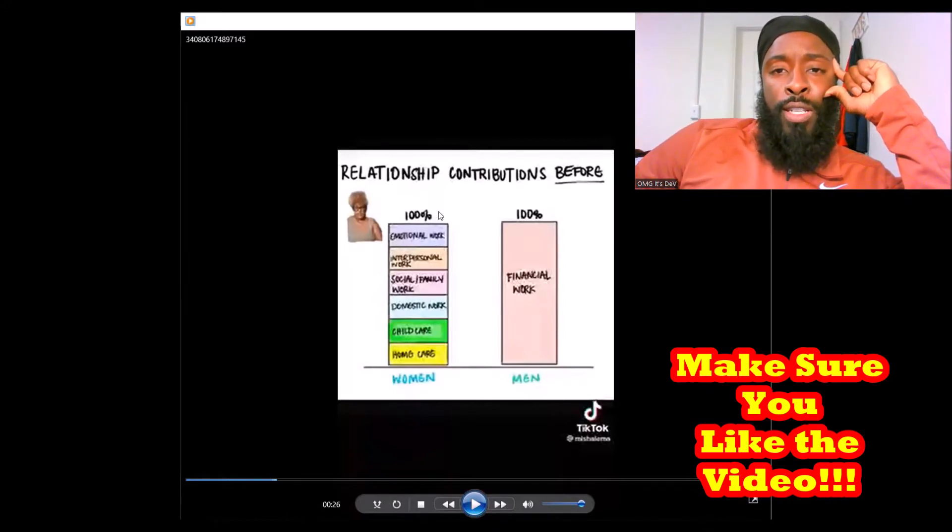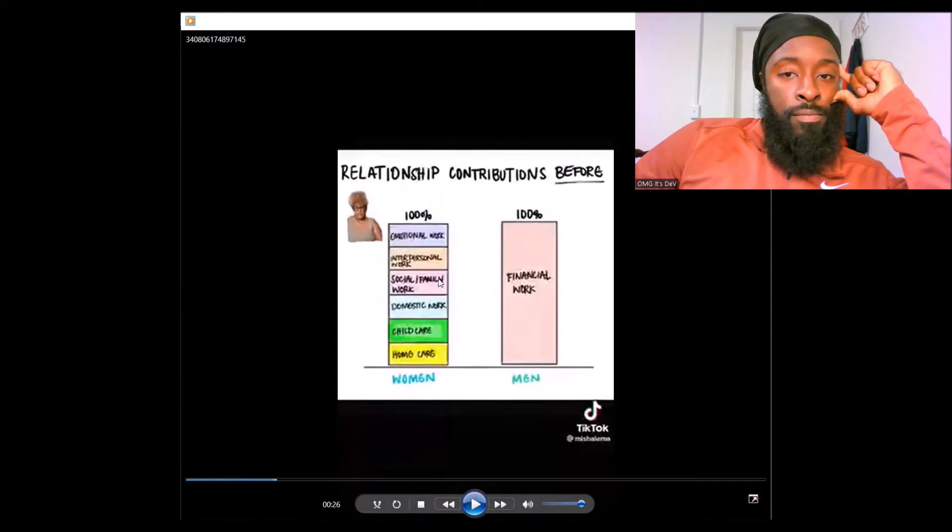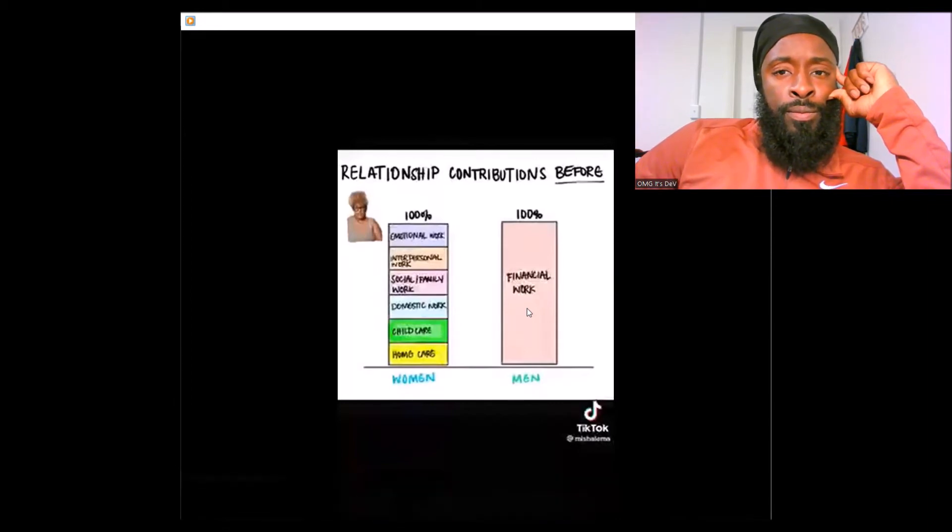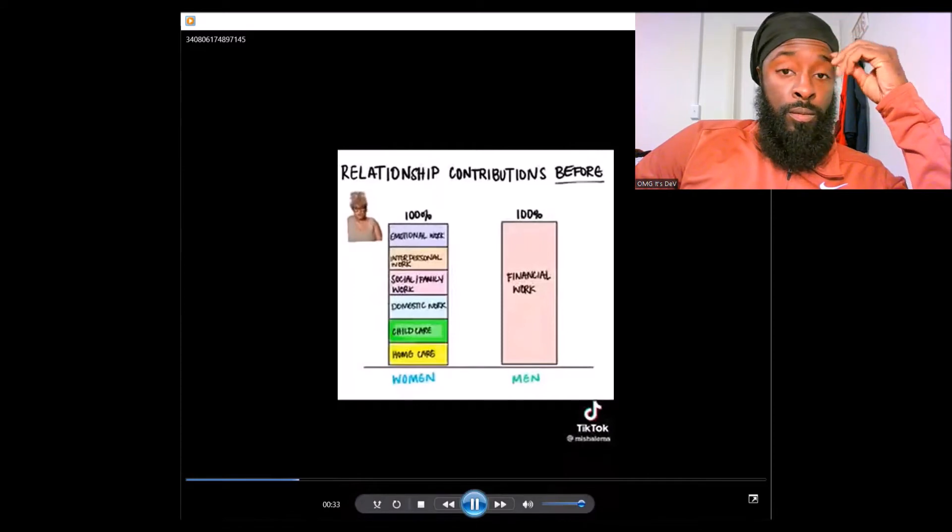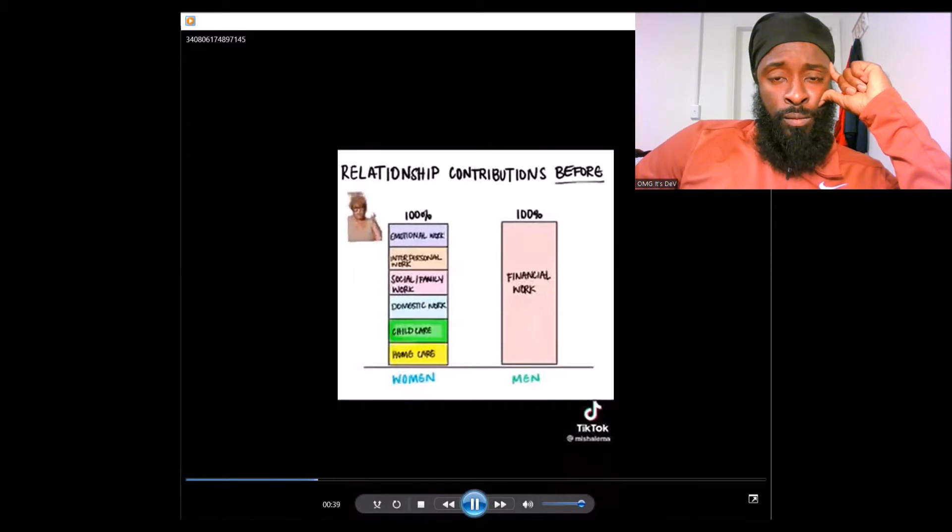So she made a chart. It says relationship contributions before. Okay, she got emotional work, interpersonal care, social family work, domestic work, childcare, home care, and then the man just has financial work.